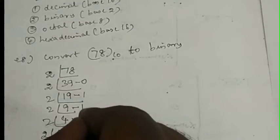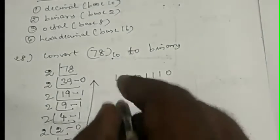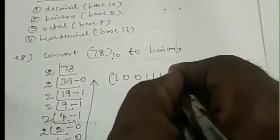Now, while you represent a binary number, write from bottom to top. Starting from 1 at the bottom and carrying forward, the converted binary number will be 1, 0, 0, 1, 1, 1, 0. So the binary representation of decimal 78 is 1001110 base 2.